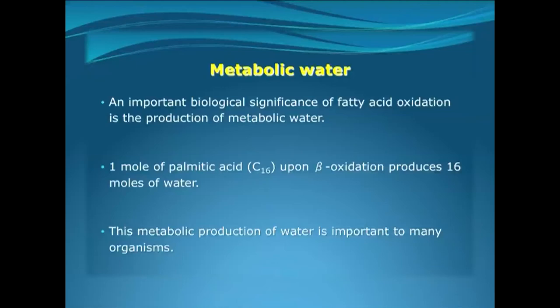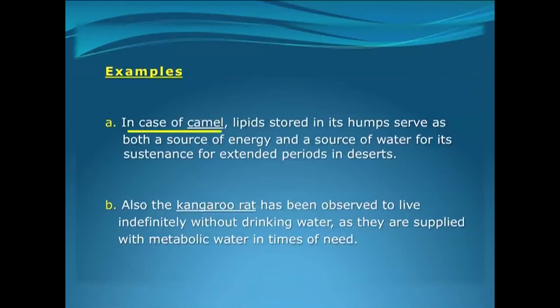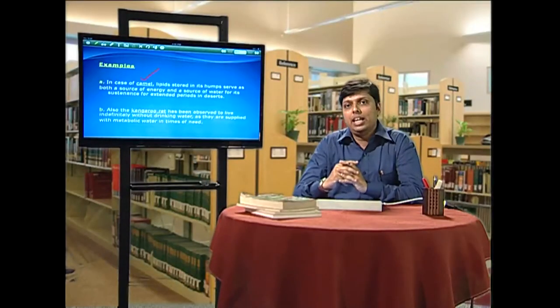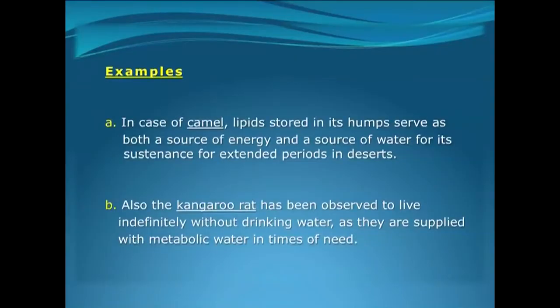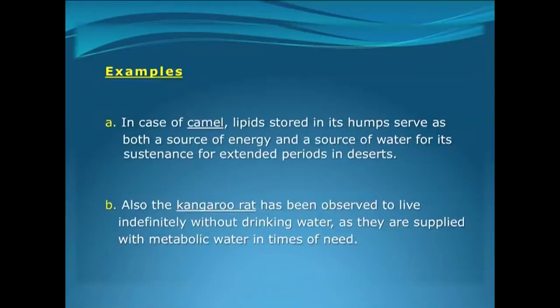A very interesting aspect of lipid metabolism is the generation of metabolic water. For example, in the case of camels, we know that they survive in desert areas for very long periods of time without drinking much water. Their hump contains a lot of lipids rich in fatty acids which undergo beta-oxidation with the generation of metabolic water, helping in the long-drawn sustenance of camels in the desert arid climate. Similarly, in the case of the kangaroo rat, metabolic water generation helps them to survive for long periods without drinking normal water.